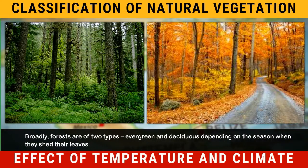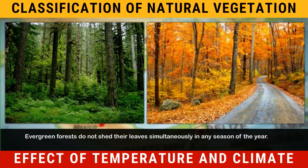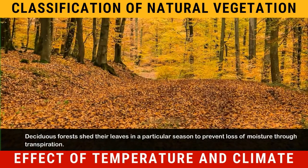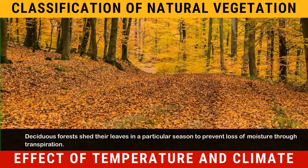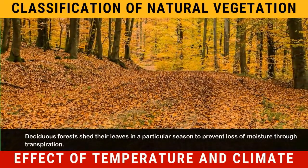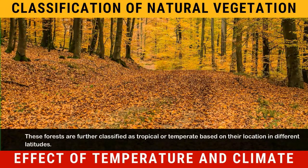Broadly, forests are of two types — evergreen and deciduous — depending on the season when they shed their leaves. Evergreen forests do not shed their leaves simultaneously in any season of the year. Deciduous forests shed their leaves in a particular season to prevent loss of moisture through transpiration. These forests are further classified as tropical or temperate based on their location in different latitudes.